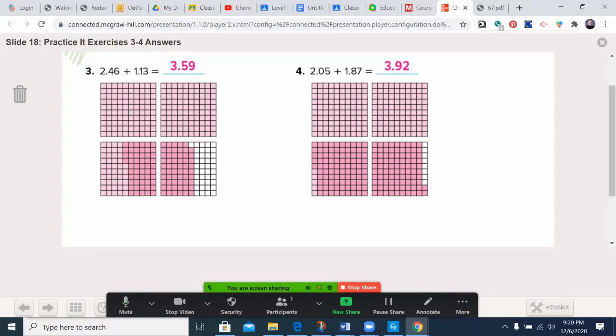2.05 plus 1.87. I have two full ones. There's a third full one. 0.87 would be eight full and seven tenths, seven of the little blocks. And then I have five more. So I put three here and two down here. Now I have one, two, three, point, all the way to nine, two, 3.92.